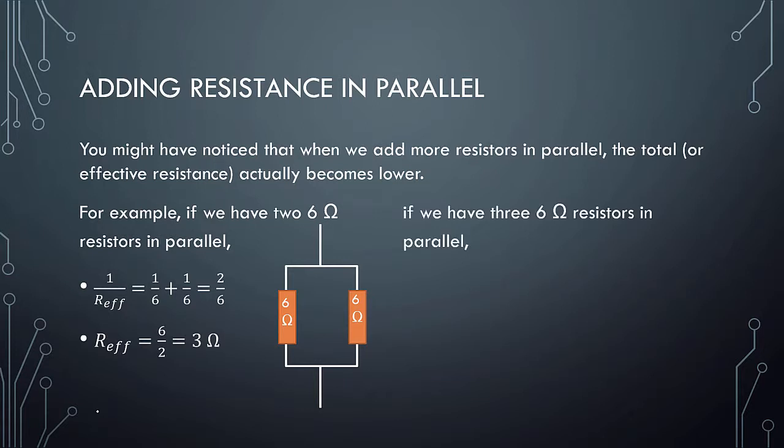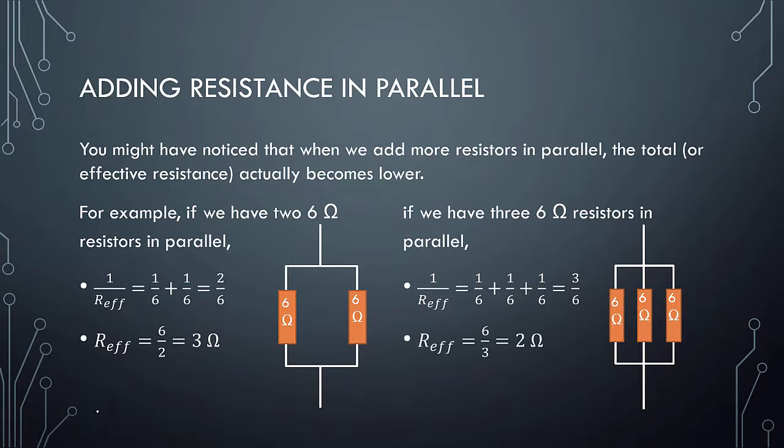Similarly, if we have three 6 ohm resistors in parallel, you do the same thing, except you add another 1 over 6, so in this case it's 3 over 6. Flip it over, 6 over 3 becomes 2. So we find that from two resistors which is 3 ohms, to three resistors it becomes 2 ohms.